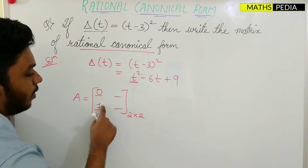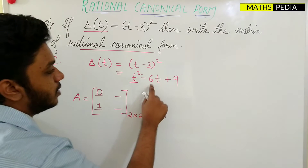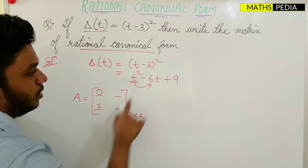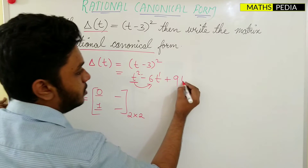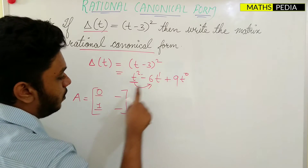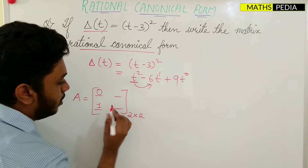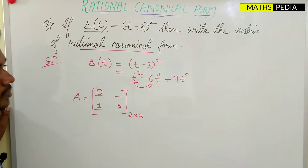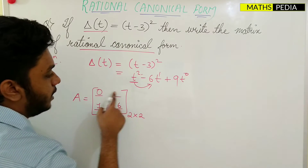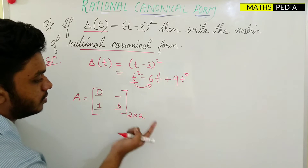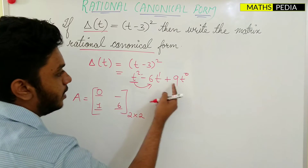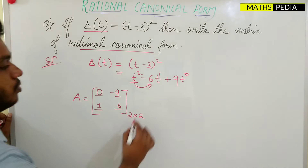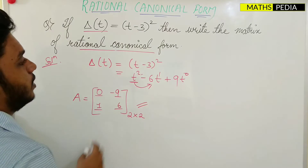For the 2×2 matrix, the first column is fixed as 0 and 1. The remaining two elements of the second column come from the equation. Moving to the term with T power 1: the coefficient is -6, but we change the sign, making it +6. For T power 0: the coefficient is 9, but we change the sign, making it -9.